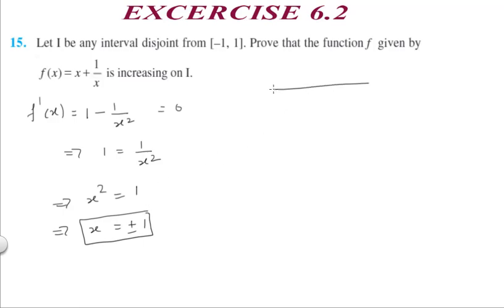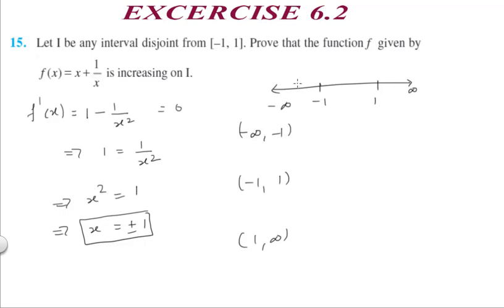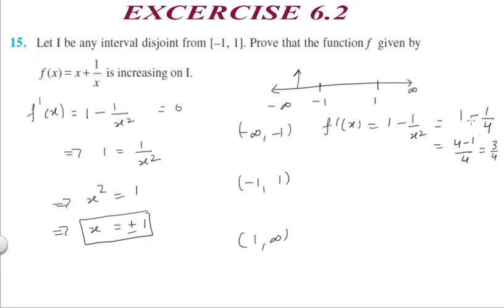The three disjoint intervals are: minus infinity to -1, -1 to 1, and 1 to infinity. For minus infinity to -1, take x = -2: f'(-2) = 1 - 1/4 = 3/4, which is positive — increasing. For -1 to 1, take x = 1/2: f'(1/2) = 1 - 1/(1/4) = 1 - 4 = -3, which is negative — decreasing.